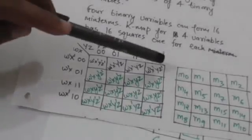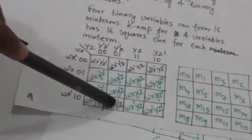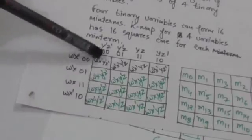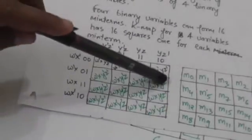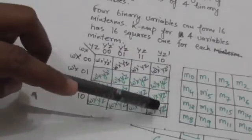One more important thing: it is assumed that the top row is adjacent to the bottom row, and the leftmost column is adjacent to the rightmost column. So this square is adjacent to this square, this square is adjacent to this square, and so on — each edge square wraps around to its counterpart on the opposite side.